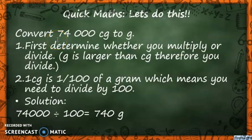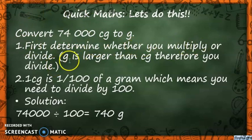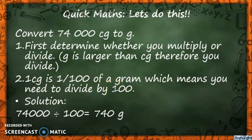Quick maths — let's do this. Convert 74,000 centigrams to grams using method 1. Step one: determine whether you multiply or divide. Gram is larger than centigram, therefore you divide. Step two: 1 centigram is one hundredth of a gram, which means you need to divide by 100. Let's see if we're on the right track.